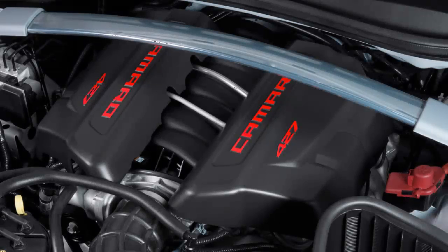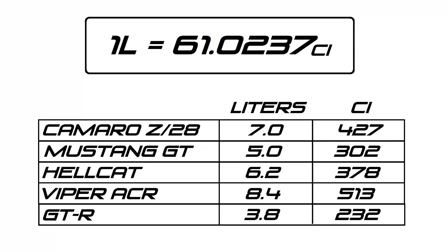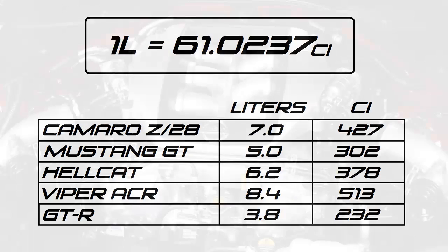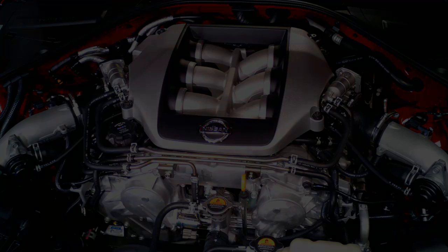Likewise, the new Camaro Z28 from 2015 says 427 on the engine cover, referring to 427 cubic inches or 7 liters, which is the displacement of the LS7 V8. You can do this for other engines as well — the Viper's 8.4 liter engine is 512 and a half, rounded up to 513 cubic inches. The Nissan GT-R's 3.8 liter engine could be converted to 232 cubic inches, although I don't think I've ever heard of anybody doing that. There are technically other units you could use to measure volume, but I don't think I've ever seen anything else on the side of an engine or car.